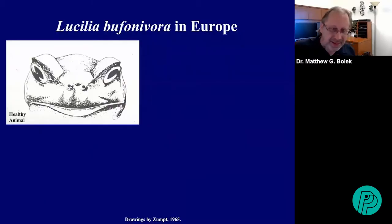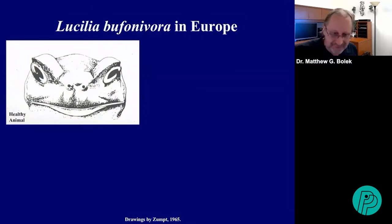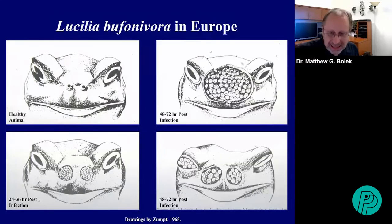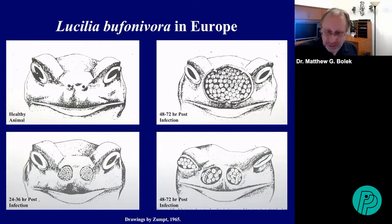Here is the dreadful part. This is a healthy toad that just became infected — the maggots crawled into the lacrimal ducts into the nasal cavities. Within 24 to 36 hours, you can see the maggots feeding inside, causing a larger wound. Within 40 to 72 hours, they eat most of the nasal passages away, move into the eyes and ingest the brain, kill the amphibian host, and then move out into the soil where they pupate into adult flies.